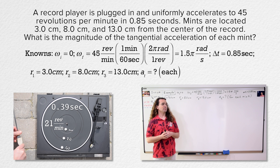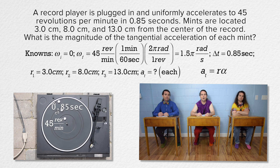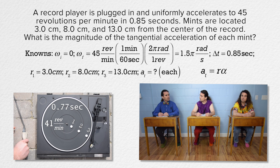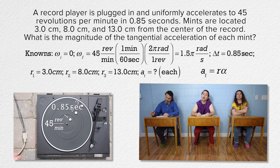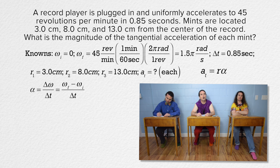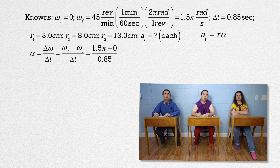Billy, how should we solve this problem? Tangential acceleration equals radius times angular acceleration. We have the radius of the path for each mint. However, we do not have the angular acceleration — but since all mints are on the same record player, every mint has the same angular acceleration. We can solve for it using average angular acceleration: change in angular velocity over change in time, or (ω_final − ω_initial) / Δt. So 1.5π minus 0 divided by 0.85 equals 5.544 radians per second squared.